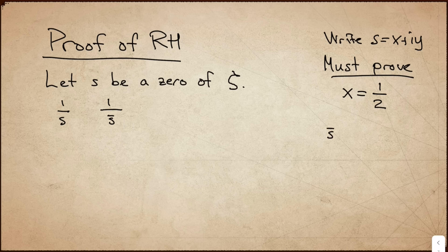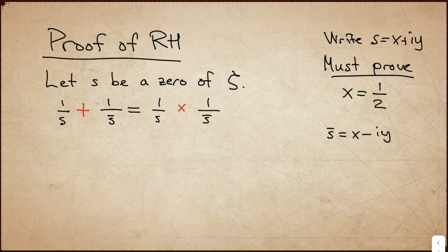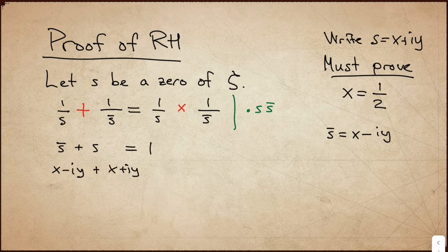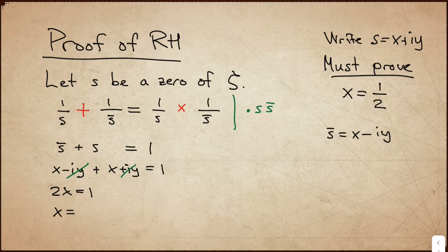This is clearly equal to one over s and one over s-bar again. Now, the key step is to insert Axiom A into this equation, like this. We then multiply both sides by s times s-bar. This gives s-bar plus s equals one. In other words, x minus iy plus x plus iy is one. These terms cancel, and so 2x equals one. Very good. Hence, x must equal one half. And this completes the proof of the Riemann hypothesis.